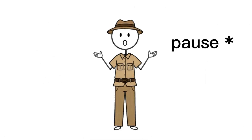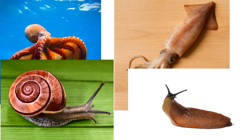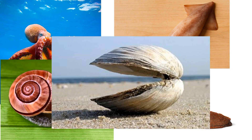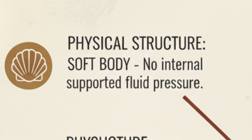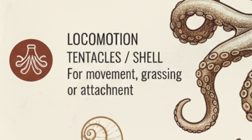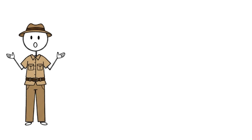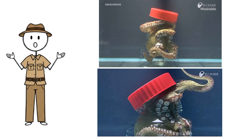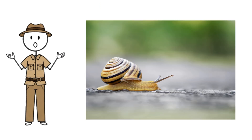Mollusks — the soft squad. Octopus, squid, snails, slugs, clams. How to classify a mollusk: if an animal has a soft body, no bones, sometimes a shell, tentacles, or muscular foot — it's a mollusk. Octopuses are overpowered: three hearts, eight arms, escape artists. Snails move at one kilometer per decade, but still get where they need to go.